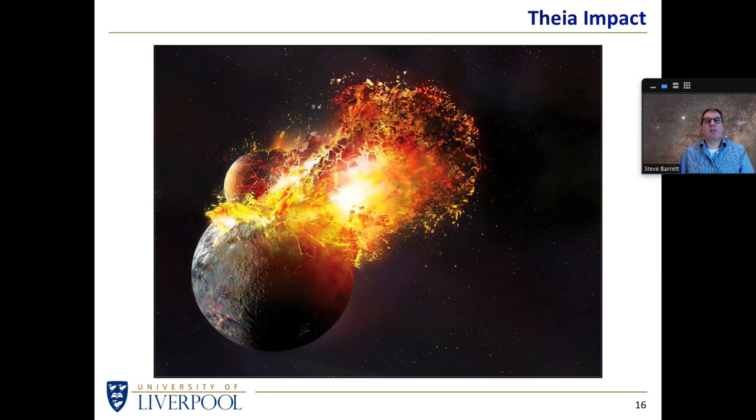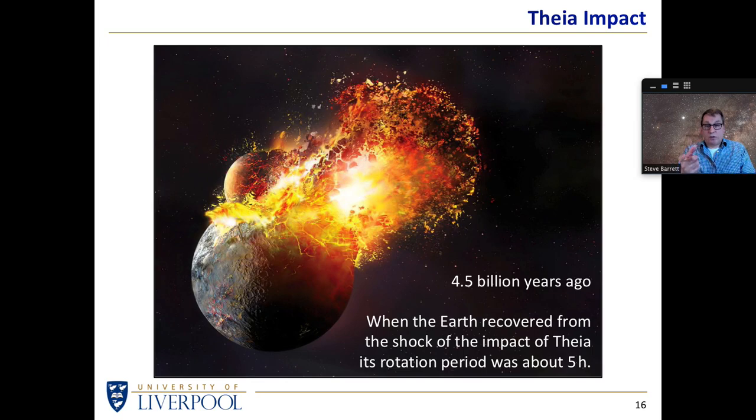Why should that be? Well, if we think back to the formation of the earth, we believe that something of order four and a half billion years ago, a Mars-sized object collided with the earth. We're calling that object Theia. A huge amount of material was spalled off the collision. And most of that material eventually condensed into what we now call the moon. And what was left was a very rapidly spinning earth.